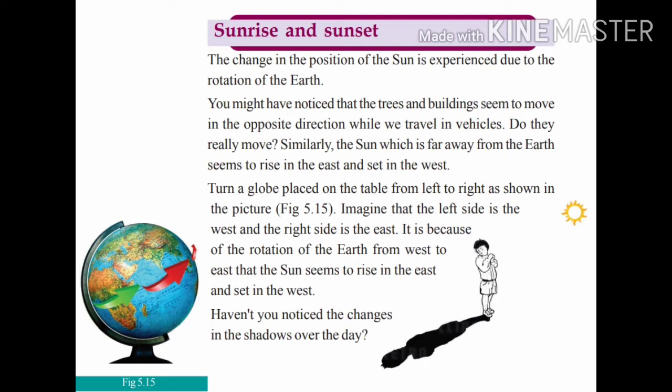In smaller classes, you might have learned that the sun rises in the east and sets in the west. But it is not like the sun is actually moving from east to west. Actually, our earth rotates from west to east. Because of this rotation from the western direction to the eastern direction, we feel like the sun rises in the east and sets in the west.